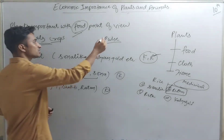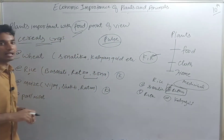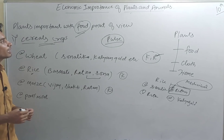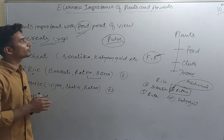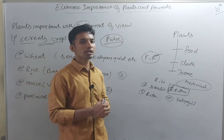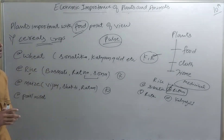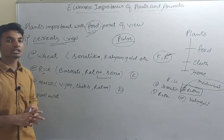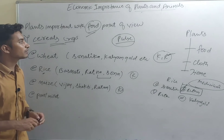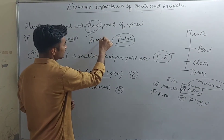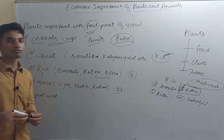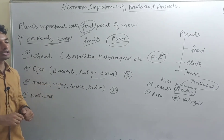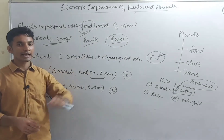In the next session, we will study about pulses — different types of daal — which fall in our food category. Animals like honeybees provide honey, which is commercially beneficial. Plants also include cash crops like sugarcane. In the next session, we will study about pulses and commercial crops as well.